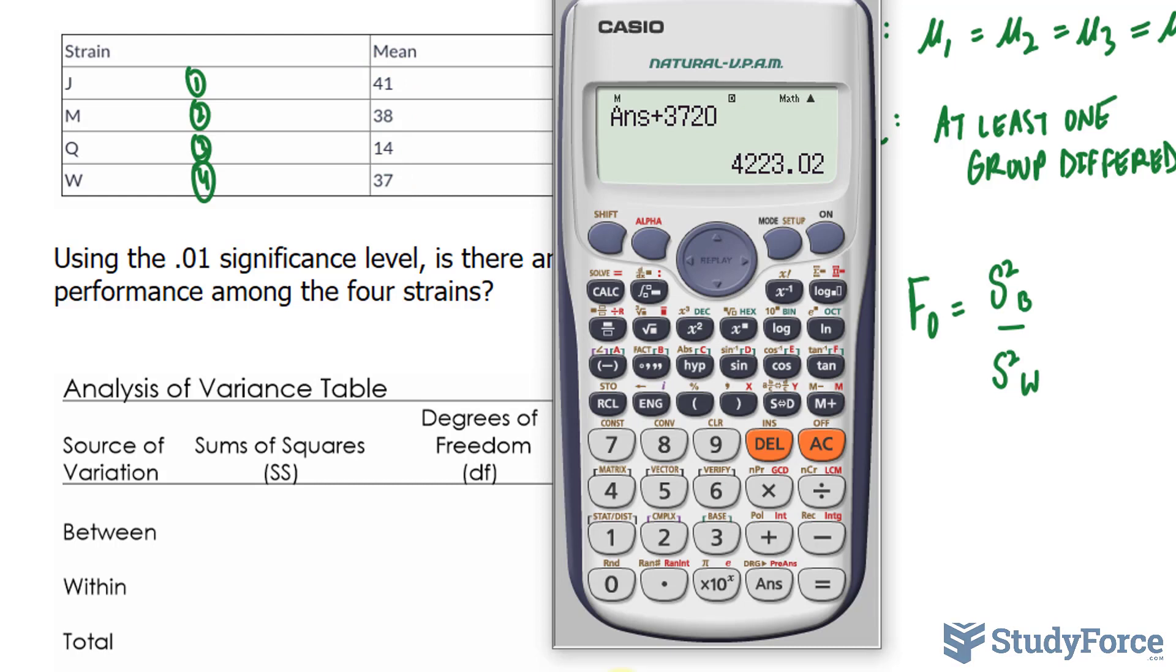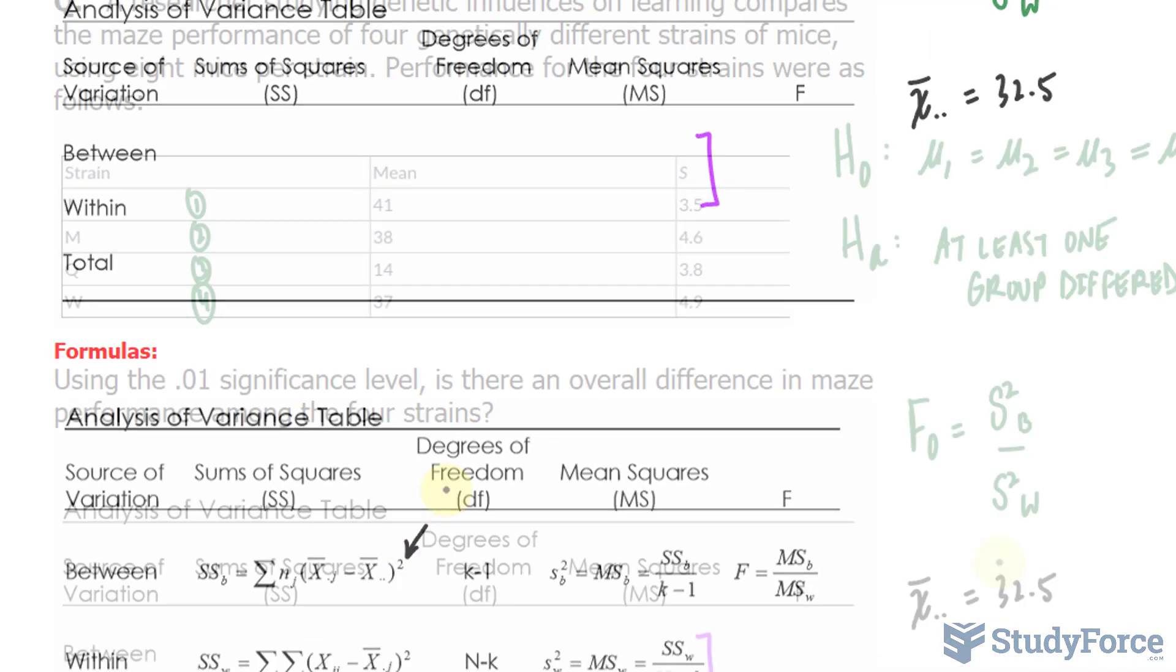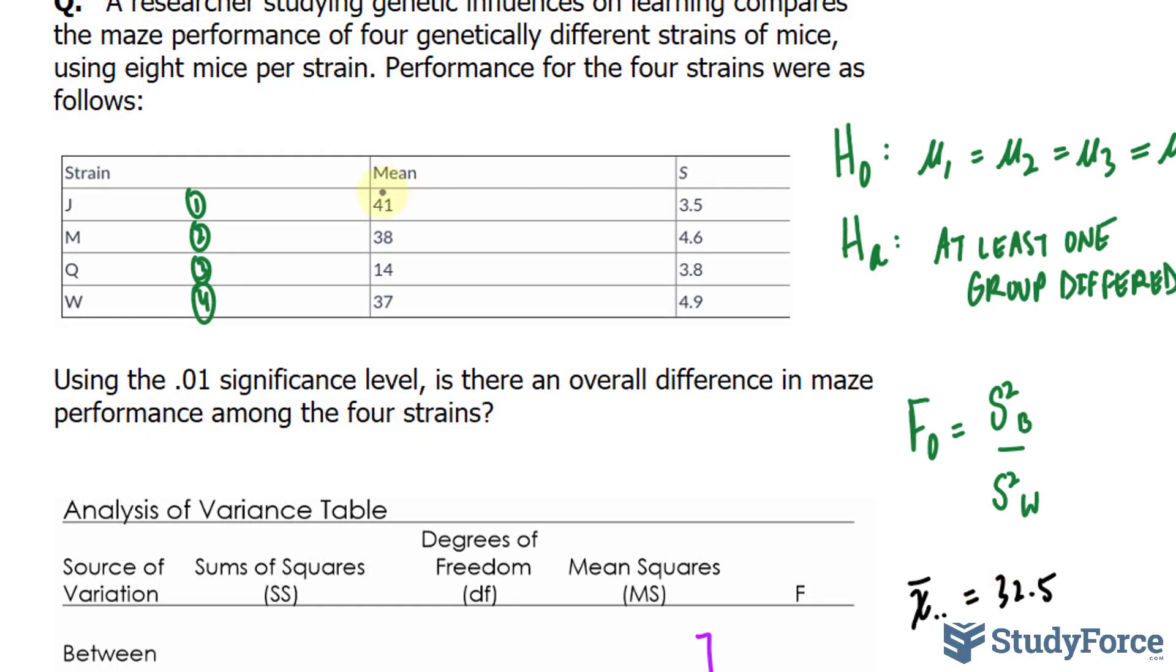We'll add those up and divide by four. So I have 41 plus 38 plus 14 plus 37, divide that by four, and we end up with 32.5. So I'll write down x bar dot dot is 32.5. What we do with this value, according to this formula, is we take 32.5 and subtract it from each of these values, 32.5, 32.5, and so on.